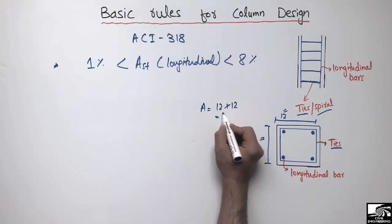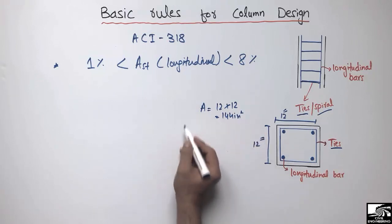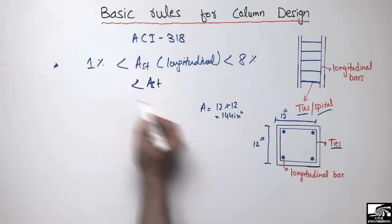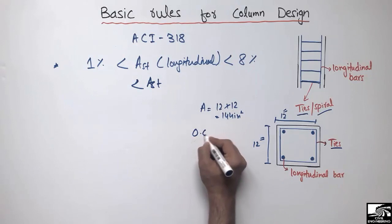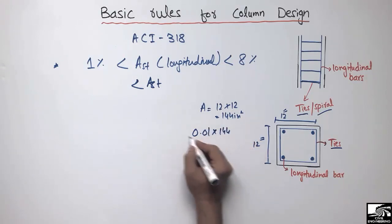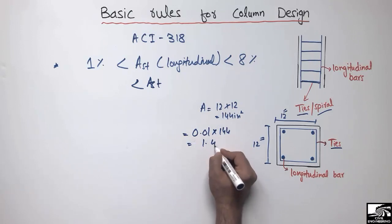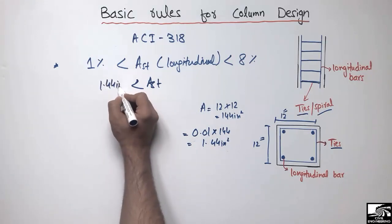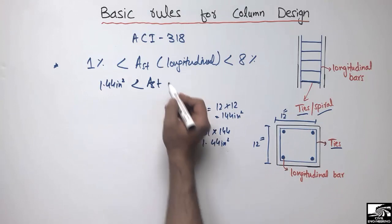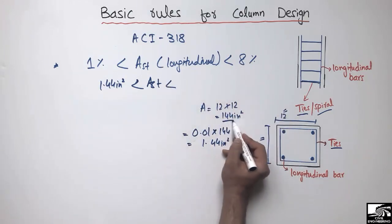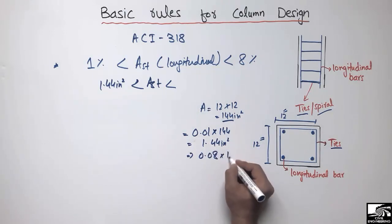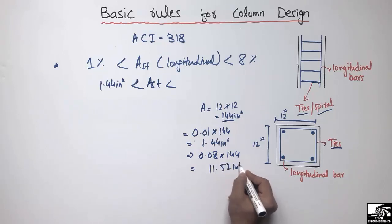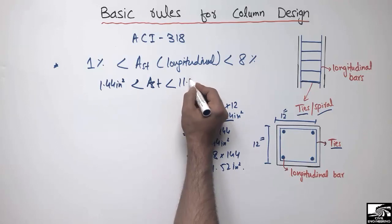The gross area of this column comes out to be 12 inches × 12 inches = 144 square inches. The area of the longitudinal bar should be greater than one percent of this area, which comes out to be 1.44 square inches. It should also be less than eight percent of this area, which comes out to be 11.52 square inches.